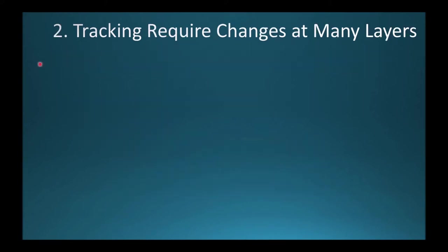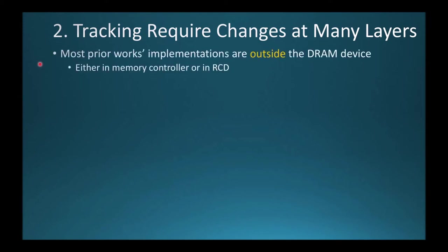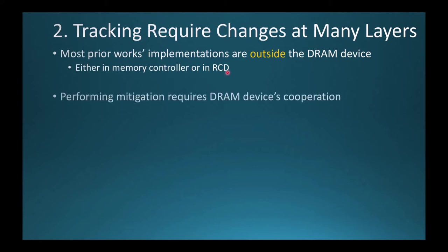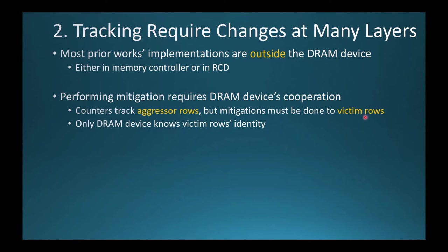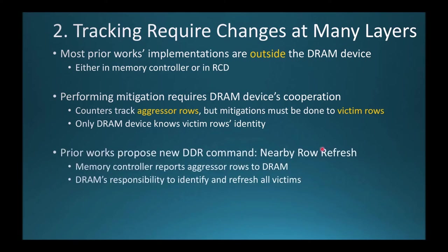The second problem with tracking approaches is that they require changes at many layers. Most of these schemes implement their logic outside the DRAM device, either in the memory controller or in the RCD chip. Such approaches preclude the ability to refresh victim rows without the cooperation of the DRAM device. By tracking aggressive rows, these schemes cannot identify affected victim rows unless they have visibility into the DRAM's internal physical row mappings. DRAM vendors regard internal row layout and mappings of logical to physical DRAM rows as proprietary, and are unwilling to share them. Instead, prior works propose a new DRAM command called Nearby Row Refresh, by which the memory controller reports an aggressor row's address and instructs the DRAM to refresh all potential victims.